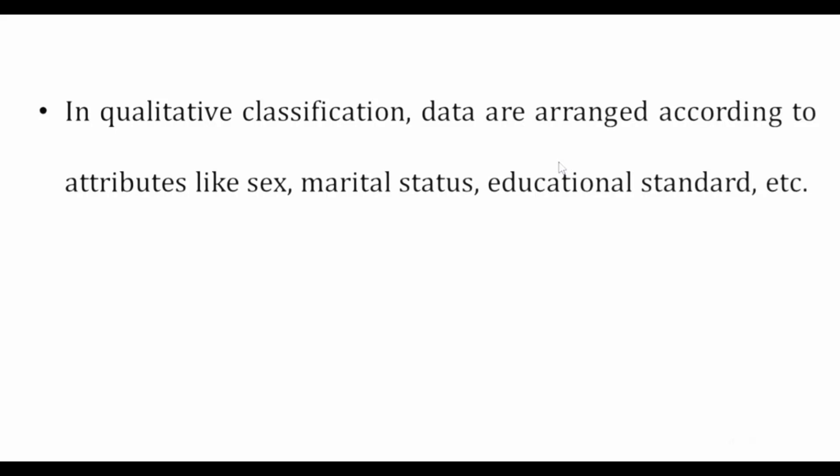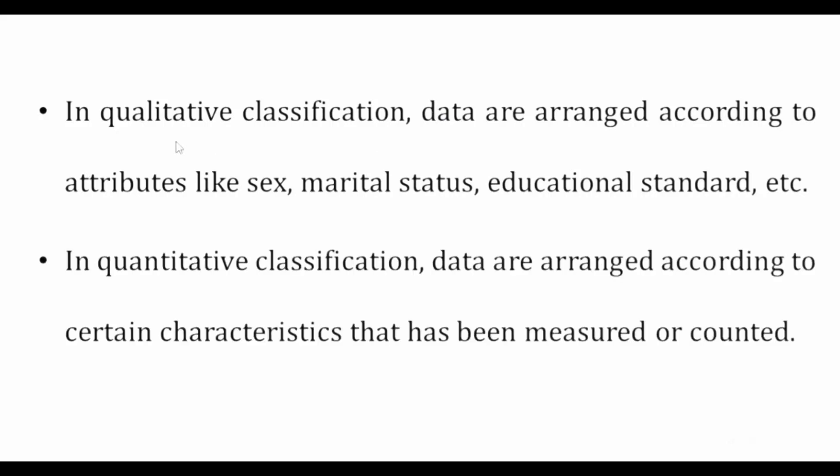The qualitative basis includes things like marital status — grouped based on similarity, such as single, married, or divorced. Based on education level, data has been classified accordingly. These are qualitative classification examples.